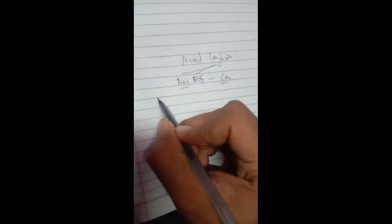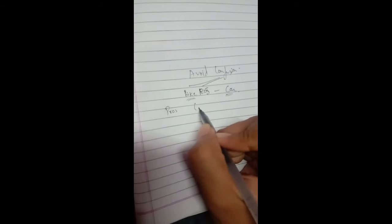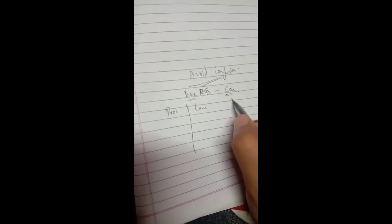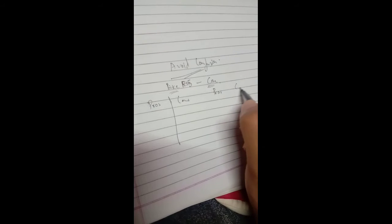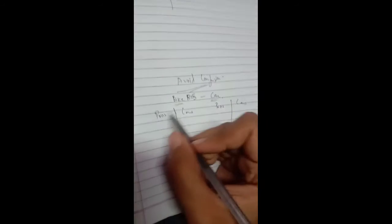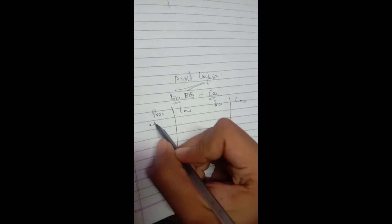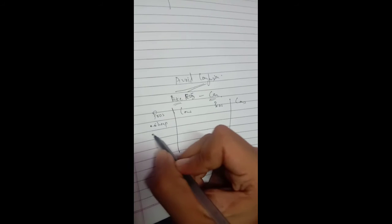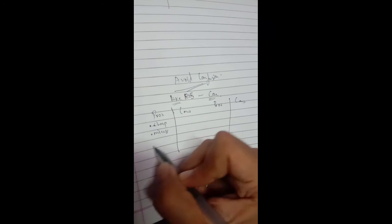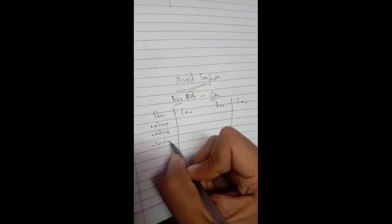best case scenario? So you write down the pros and cons of bike, you write the pros and cons of car. Okay, so you'll say like bike is cheap, it gives more mileage, more saving. And cons would